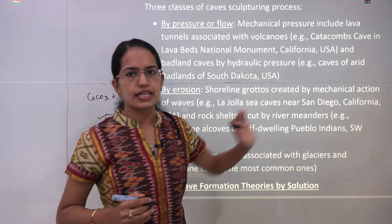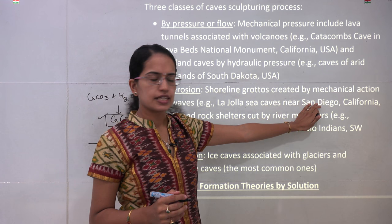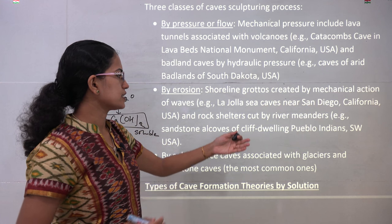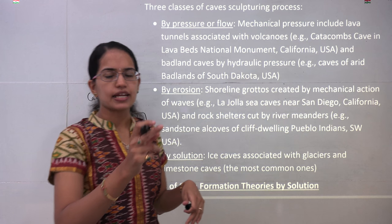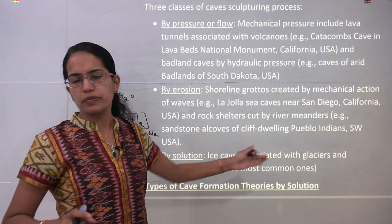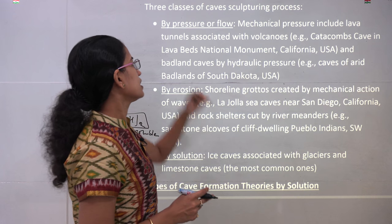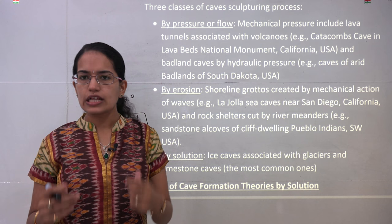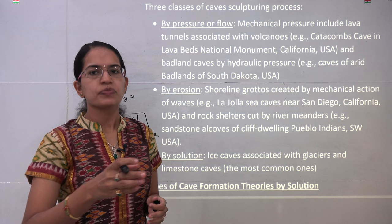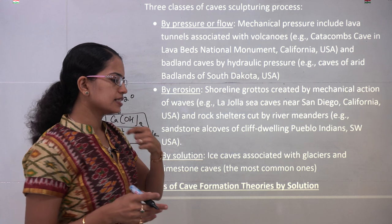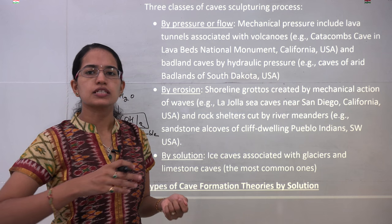There are two other processes by which caves could be formed. First is the mechanical action of the waves, which can be seen in caves near the San Diego region. The next is by the cutting action of river meandering, commonly seen in the areas of southwest United States. The third is due to volcanic activities — you have lava tubes that are formed, commonly seen in areas like the Lava Bed National Monument in the United States, and near Mount St. Helens.